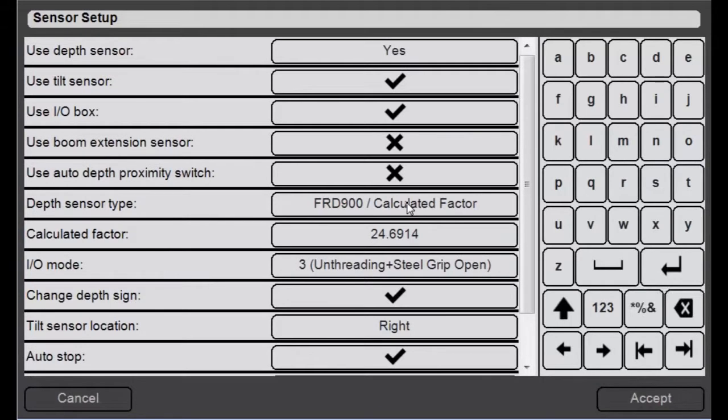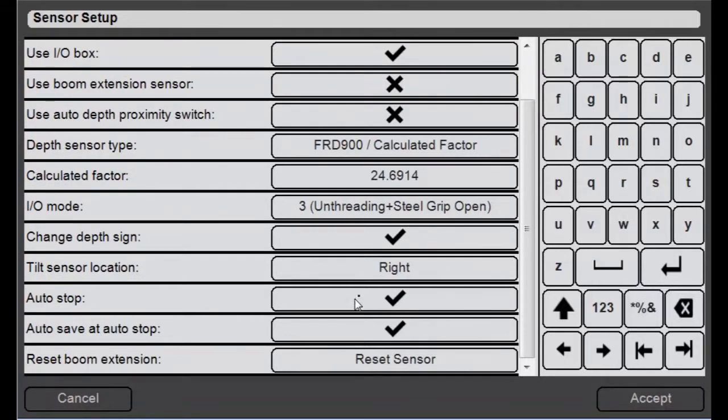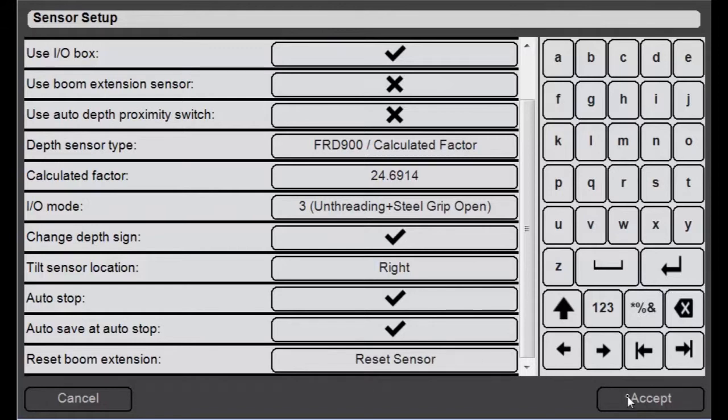Make sure that use tilt sensor is enabled and then down here at tilt sensor location you'll have to figure out which side your tilt sensor is located at. I know mine is on the right hand side but I will show you how to determine that location.